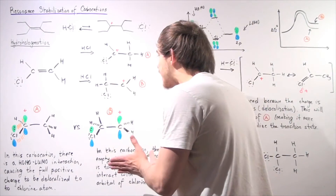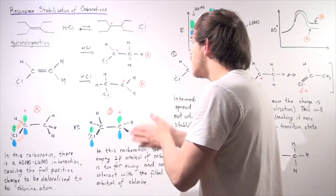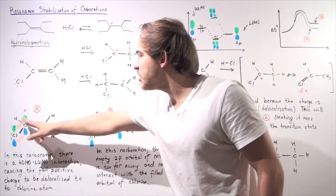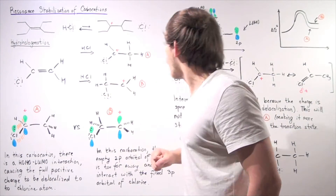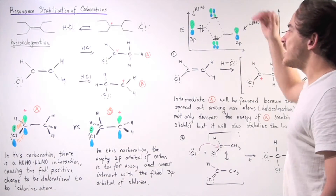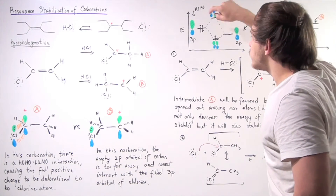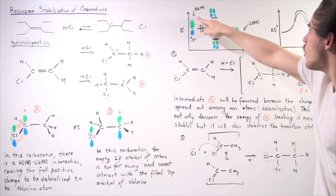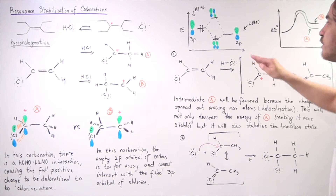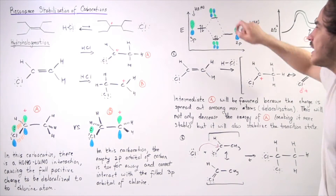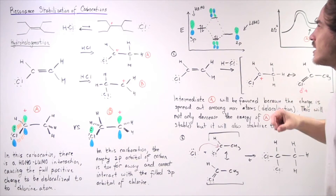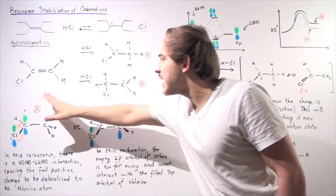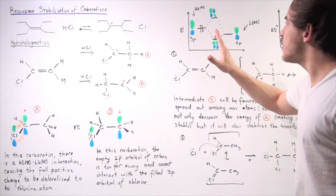Let's look at what's happening between the orbitals. The higher-energy 3p orbital containing the pair of electrons interacts with the lower-energy LUMO orbital. The HOMO and LUMO interact, forming two molecular orbitals — a bonding and an antibonding orbital. The pair of electrons is now found in the lower bonding orbital, making the molecule much more stable than before.